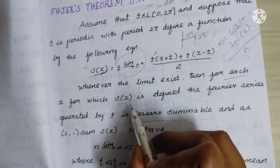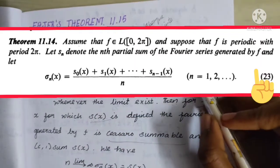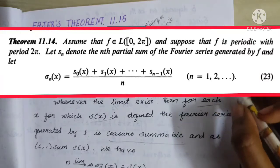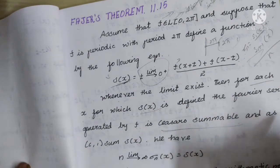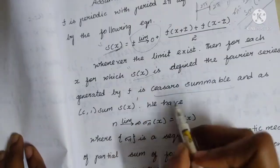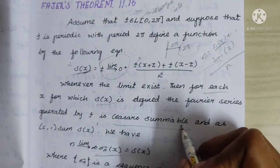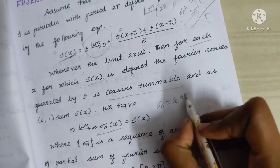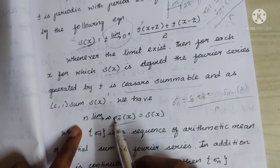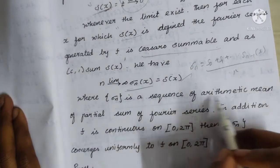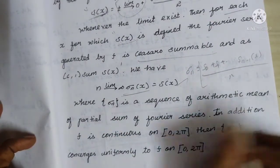This is the C,0 summability of Fourier series statement. Let sₙ denote the nth partial sum of the Fourier series generated by f, and σₙ = [s₀(x) + s₁(x) + ⋯ + sₙ₋₁(x)] / n. So we have limit n→∞ σₙ(x) = s(x). σₙ is the sequence of arithmetic means of the partial sums of the Fourier series.